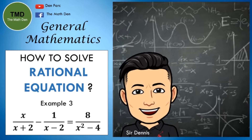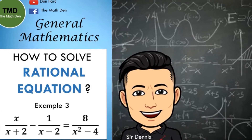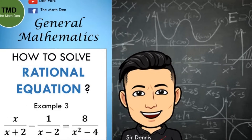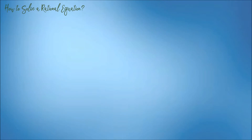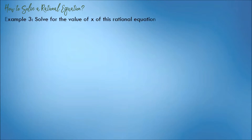Today's topic is the process of solving rational equations. How to solve a rational equation — this is finding the value or values of x that satisfies the equation. Take note of the step-by-step procedure. This is the continuation of the topic, solving rational equations. This time, we have another example.